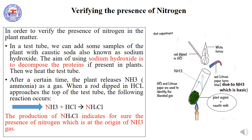NH₃ is a weak base. To test its presence, we can use a wet litmus paper which indicates the chemical medium — acidic, basic, or neutral. If the litmus paper turns blue, then the chemical medium is basic, which is the case here because NH₃ is a base. In addition, we can observe the reaction between NH₃ gas and HCl. A rod dipped in HCl approaches the top of the test tube. NH₃ reacts with HCl to produce white fumes of ammonium chloride, NH₄Cl. The white fumes indicate the presence of nitrogen, which is at the origin of NH₃ gas.